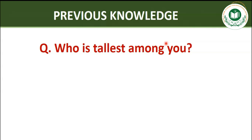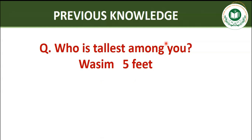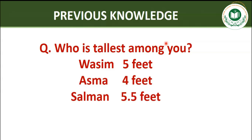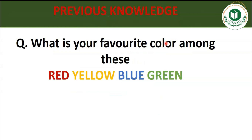So both of you think that you are the tallest — let's have a competition and we can involve another student as well. Wasim is five feet tall, Asma is four feet, Salman is 5.5 feet, so Salman is the tallest in the class. Salman, you are the winner — you are going to give a treat to your classmates! Let's have another activity in the class.